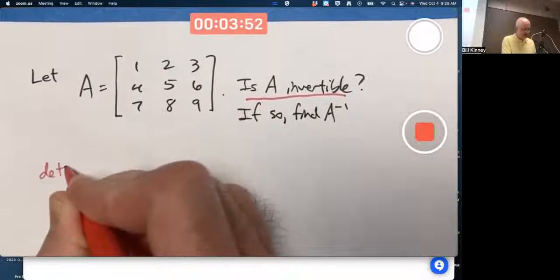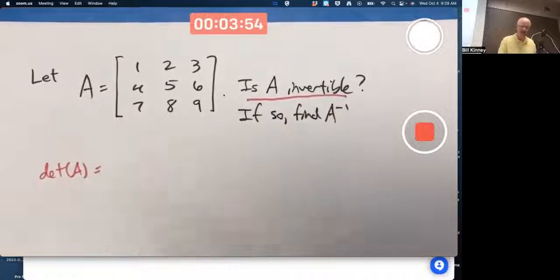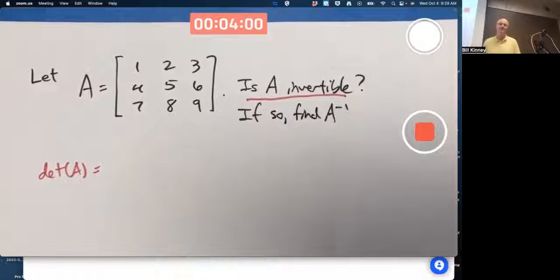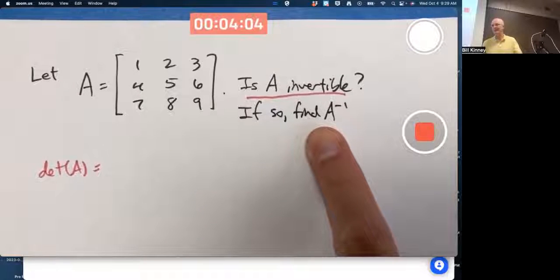The quickest way to answer that question is to compute its determinant and to see that the determinant ends up being zero. If it's not zero, then it would be invertible. But if it is zero, it's not invertible, and then we don't have to do the second question.